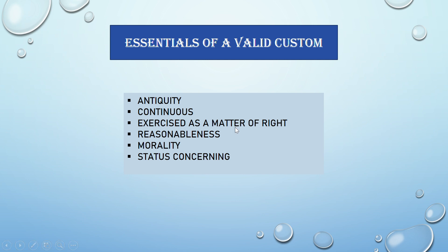Exercised as a matter of right: a custom must be enjoyed openly and with the knowledge of the community — it should not have been practiced secretly, and must be proved to be a matter of right. Reasonableness: a custom must conform to the norms of justice and public utility, and should be based on rationality and reason. If a custom is likely to cause more inconvenience and mischief than convenience, such a custom will not be valid.